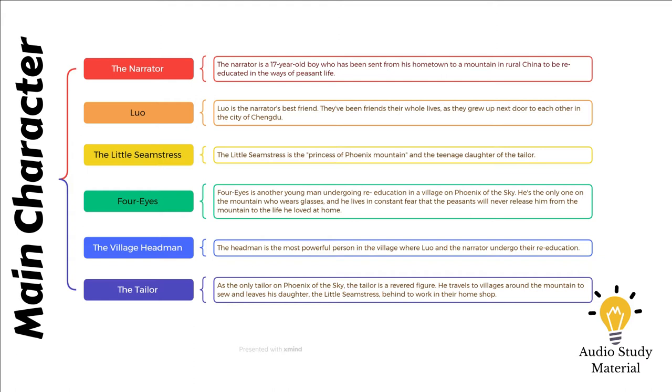The narrator adds that he and Luo have been transported to the mountain to be re-educated by the poor peasants since they are deemed intellectuals by the government. Every day, the lads endure back-breaking labor and transport buckets of waste to the fields. The mountain is gloomy and wet, and the narrator plays his violin to cheer himself and Luo up.